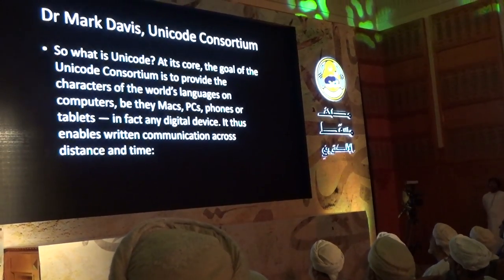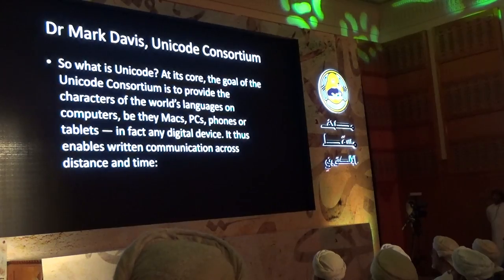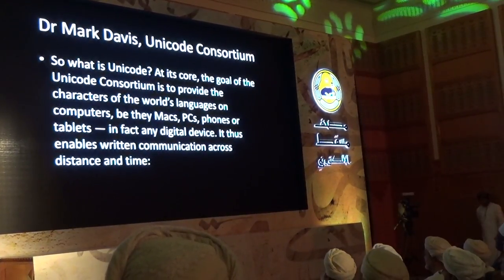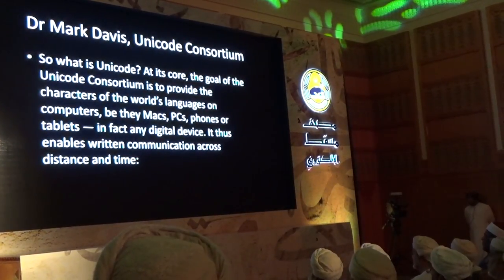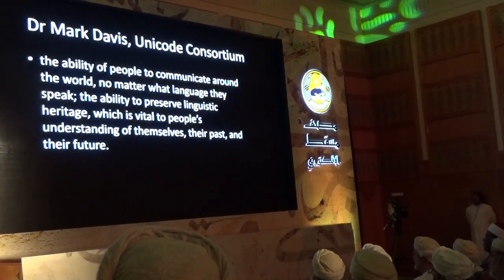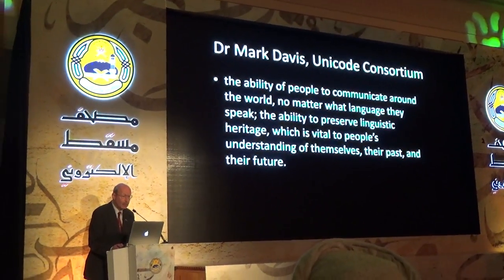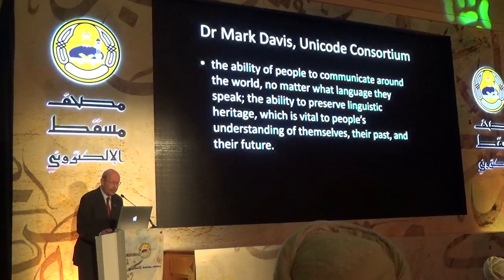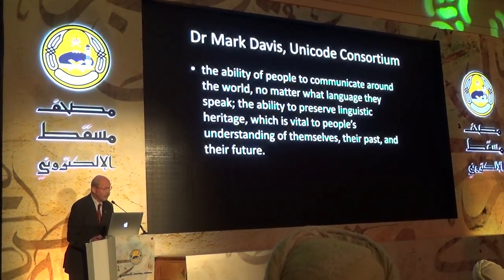'So, what is Unicode? At its core, the goal of the Unicode Consortium is to provide the characters of the world's languages on computers — be they Macs, PCs, phones or tablets — any digital device. It thus enables written communication across distance and time. The ability of people to communicate around the world, no matter what language they speak; the ability to preserve linguistic heritage, which is vital to people's understanding of themselves, their past, their future.'